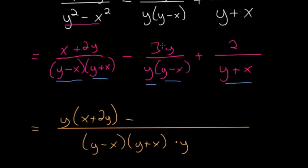and then minus. And for this second term, we have y and y minus x, but we don't have this y plus x. So we'll have to multiply top and bottom by y plus x. So then we write y plus x here, and then multiply that by 3y. And then for this last term,